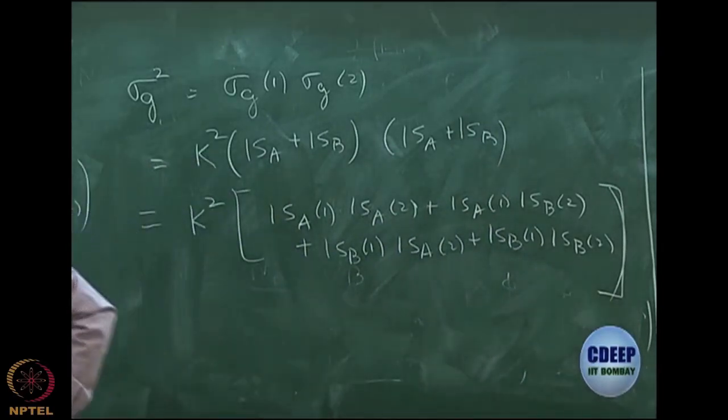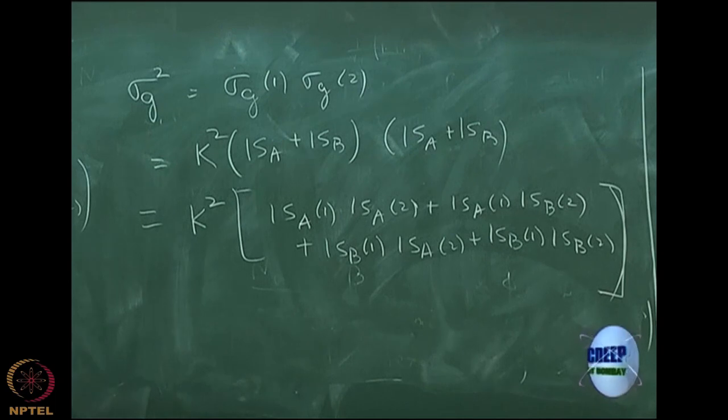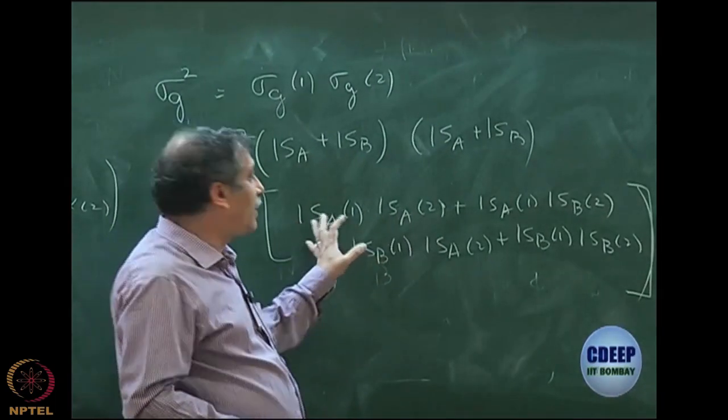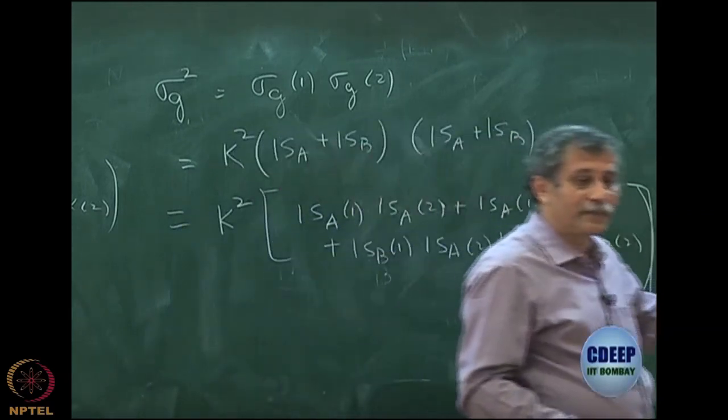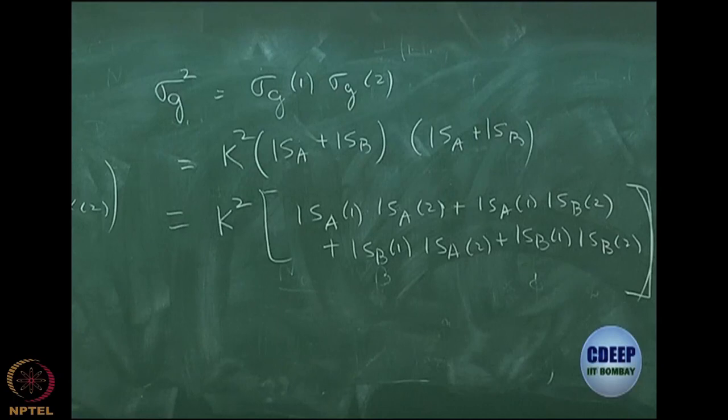I am sure you have done this many times before in MSc. When you write it in this term, you get what is called, what chemists call valence bond picture. Valence bond pictures are in atomic orbitals. I hope we can recognize that there is a valence bond picture.